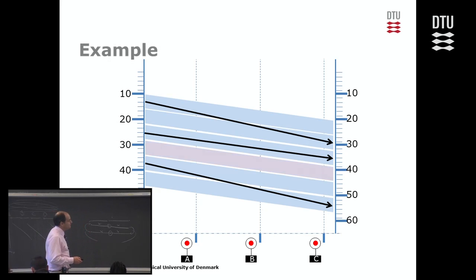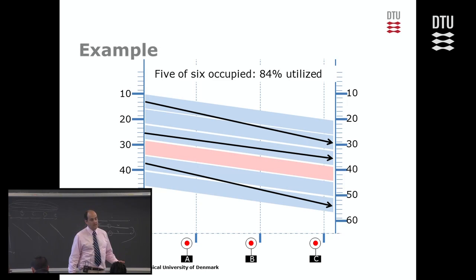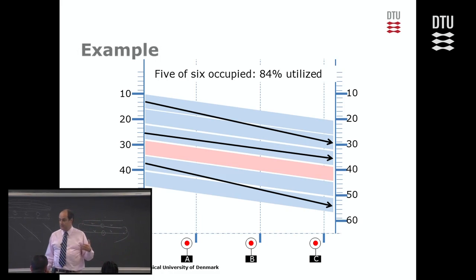So you total that all up. There's the unused path. And so we have a capacity consumption of 84%. This is the standard train path method. Create these standard track occupation paths. Graphically look at the train paths you really want to run, see which ones they consume, count it up and do the math. And then that is what's left over. And then you do the consumption over the total and you get your utilization.